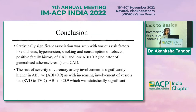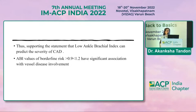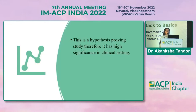The conclusion of my study is that statistically significant association was seen with these risk factors except BMI greater than 25. The risk of severity of coronary artery involvement is significantly higher in ABI positive patients, with increasing vessel involvement from single to triple vessel disease in which ABI is less than 0.9 — a statistically significant finding. This supports the statement that low ABPI can predict the severity of CAD. Patients at borderline risk also showed significant association with vessel disease involvement. Since this is a hypothesis-proving study, it has high significance in the clinical setting. Thank you.